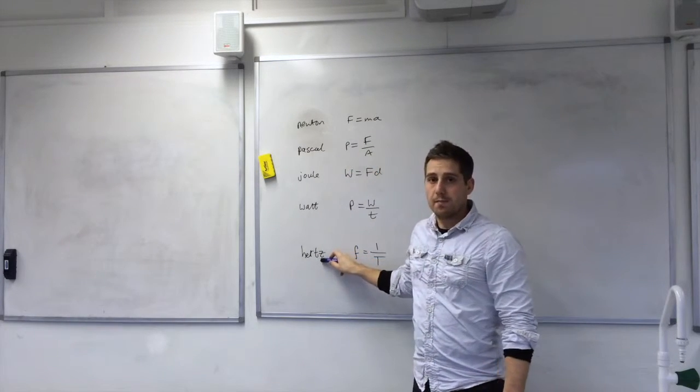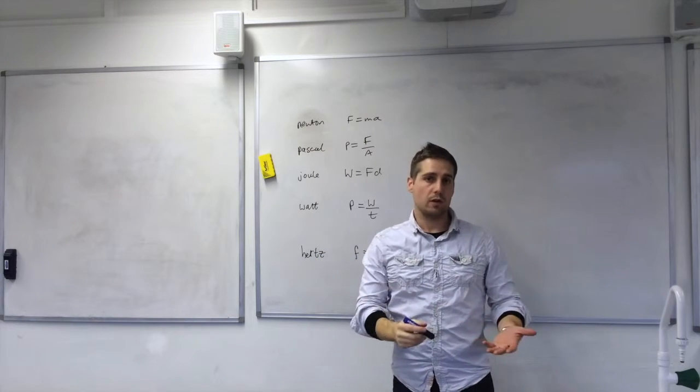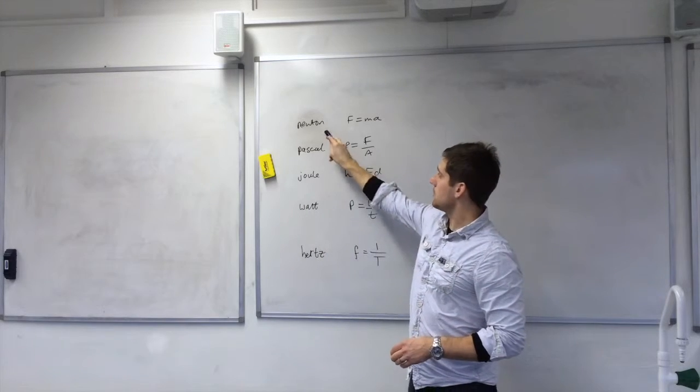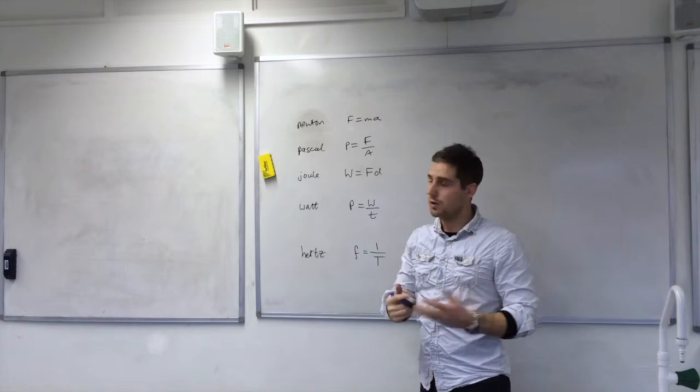I've got 5 here and next to them I've got the equation I'll use to work out the base unit equivalent for each of those units. We'll start with the Newton. F equals mA is the equation I'll use to work out the base unit equivalent.